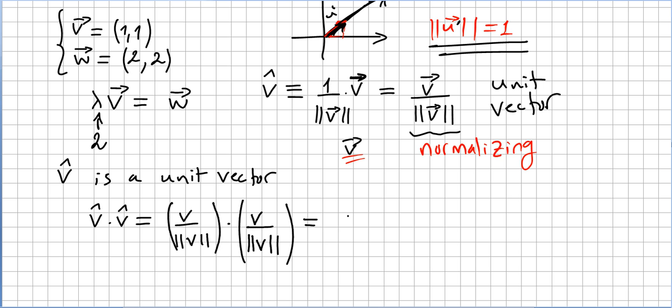So this is 1 over the norm squared, because this is v dot v, and this is the normal inner product. So you're going to get 1 over the norm of v squared times the norm of v squared. And naturally because these two cancel, so this will be 1.